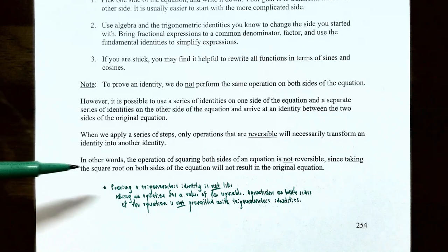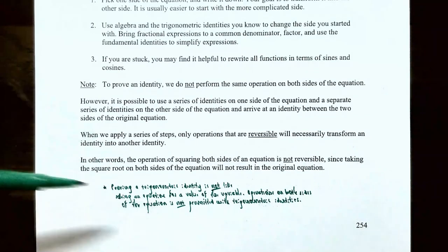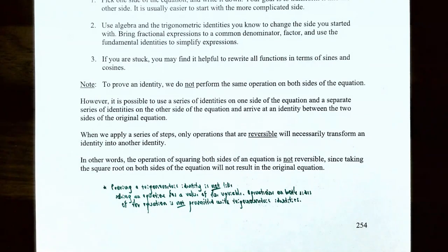Note that squaring both sides is not reversible, since taking the square root introduces a plus-or-minus. So when proving a trigonometric identity, operations on both sides of the equation are not permitted — only reversible operations applied to one side are allowed.